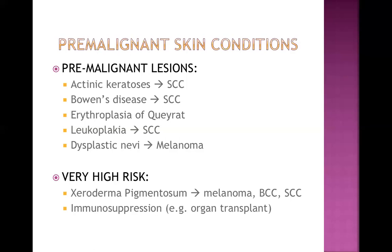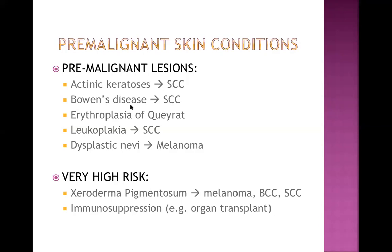What are the pre-malignant skin conditions which can change into skin cancer later on? Actinic keratosis: if a person is exposed to sun for a long time, there would be some changes occurring on the skin — some thick, flaky areas may be formed — and they may turn into squamous cell carcinoma (SCC). Actinic keratosis is therefore a pre-malignant condition for squamous cell carcinoma. Bowen's disease is another condition.